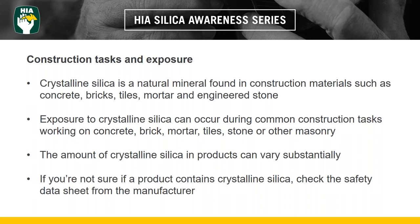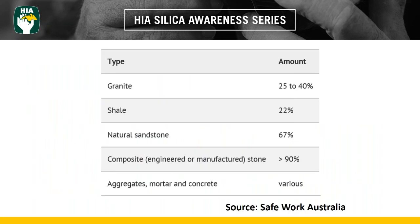Activities such as drilling, grinding, and polishing of any of those materials can cause exposure. However, the amount of crystalline silica in products can vary substantially. If you're not sure if a product contains crystalline silica, you should check the safety data sheet from the manufacturer. The silica content has a very high concentration rate in engineered and manufactured stone, with some products having greater than 90 percent concentration rate, and they are very fine particles.